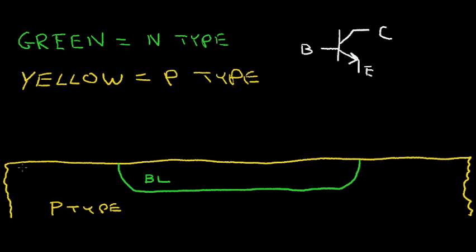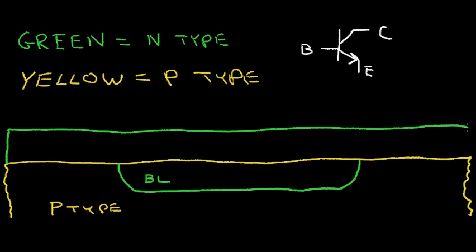The next thing typically done is that a layer of N-type silicon is grown on top of this wafer. This region of N-type material is called an epitaxial layer, and it is rather lightly doped. The buried layer is highly doped, but the region grown on top is lightly doped. With further processing steps, the buried layer will tend to diffuse up a little bit into this N region.